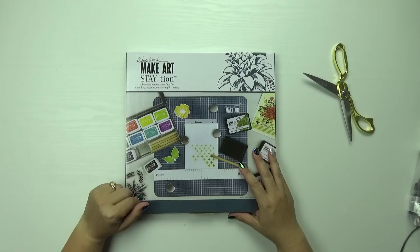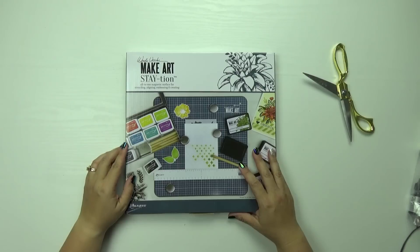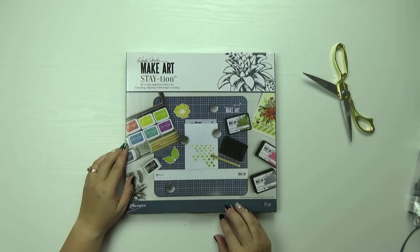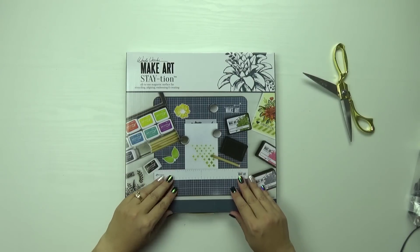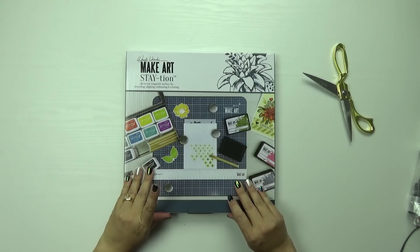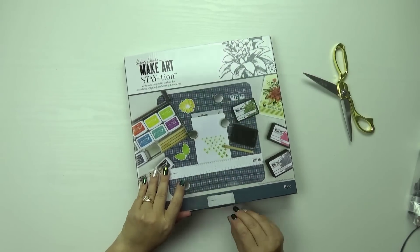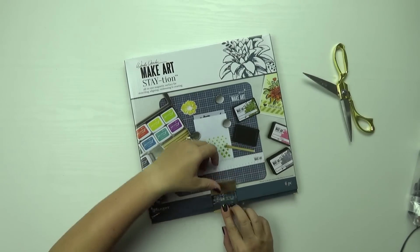It's called the Station by Ranger and it's a Wendy, I think her name is Vecchi. It's an all-in-one magnetic surface for stenciling, aligning, embossing, and creating. And I saw this online and I thought, well, maybe it would be cool for Bible journaling. That's kind of what I was thinking when I bought it. So maybe it will be cool, maybe it won't be cool, but let's check it out.